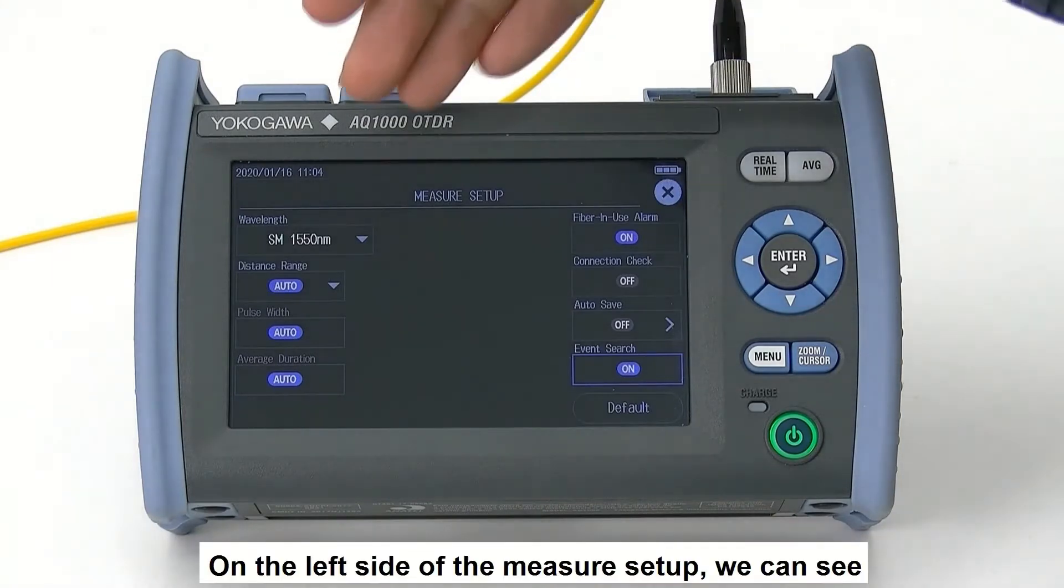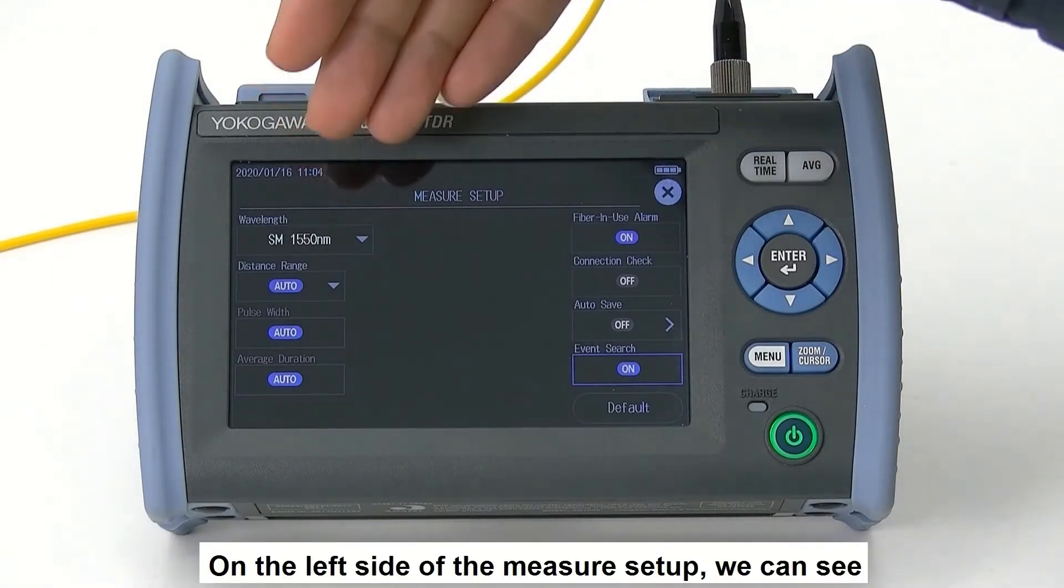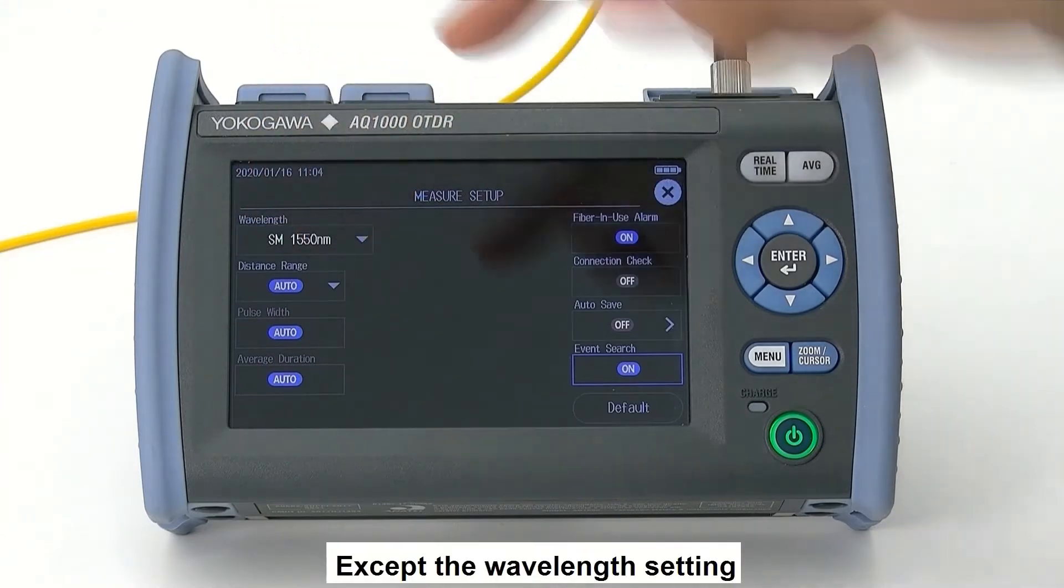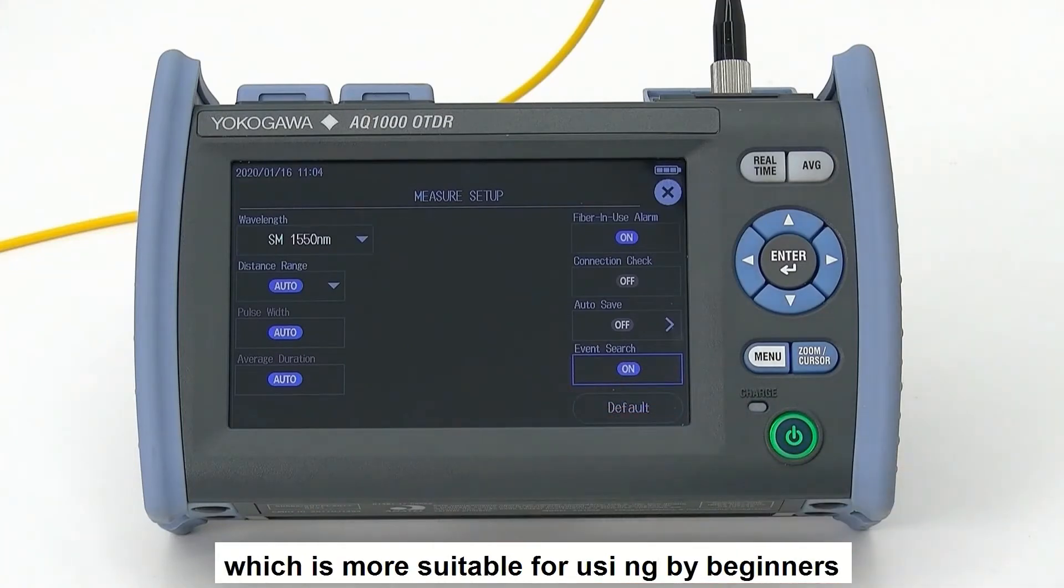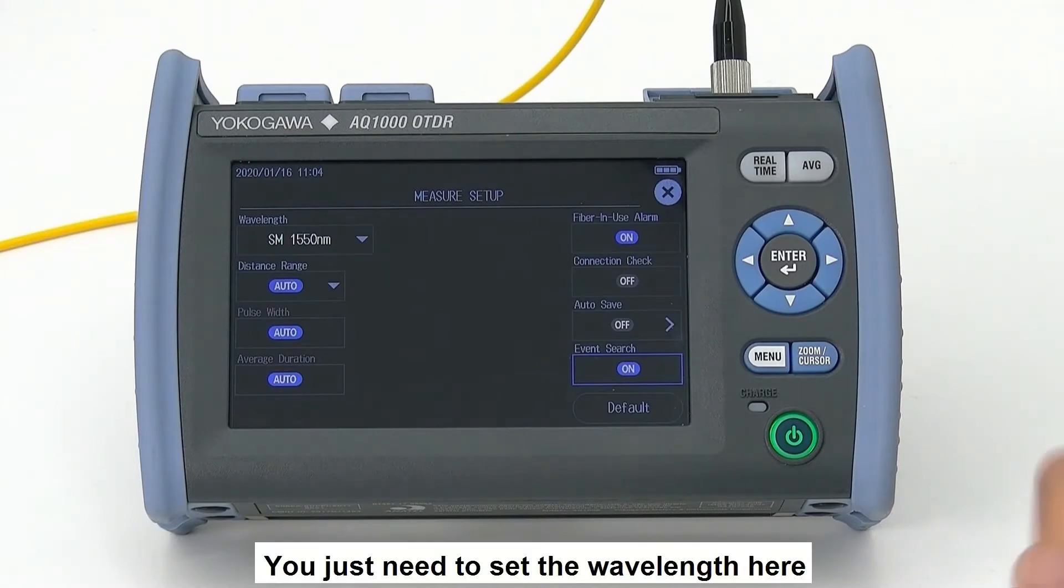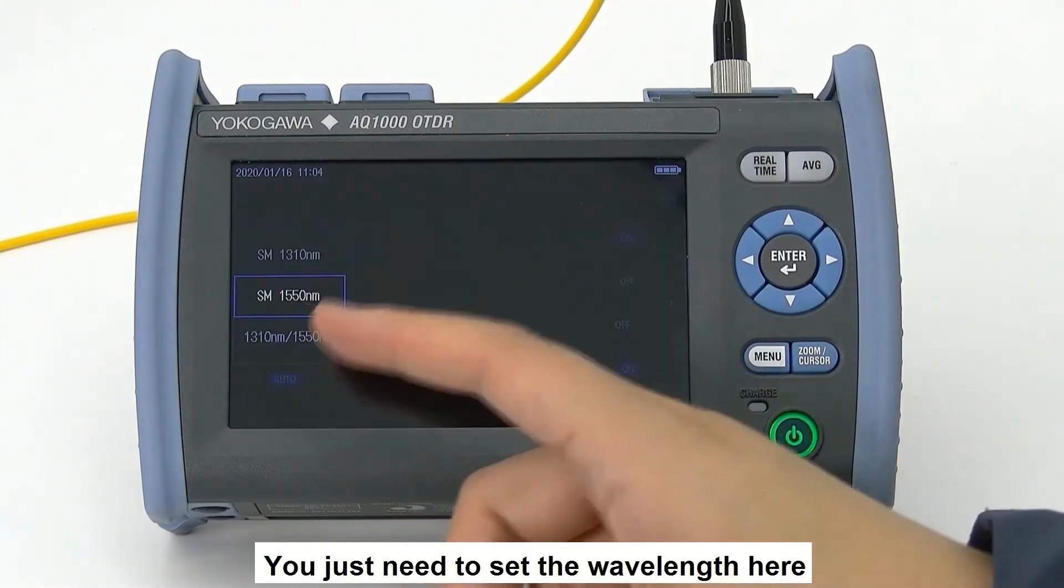On the left side of the measurement setup, we can see, except the wavelength setting, all other parameters can be set to auto, which is more suitable for beginners who are not familiar with the OTDR. You just need to set the wavelength.